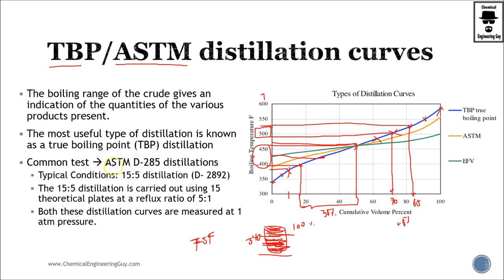There are several tests available. The most common is ASTM D285 distillation. Typical conditions are 15 to 5, meaning 15 stages with a reflux ratio of 5 to 1. This is very important because using more stages gives better purity, and different reflux ratios yield different results, so it is critical to use the same specifications when comparing results.